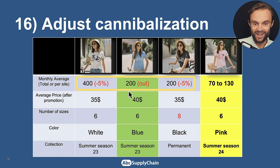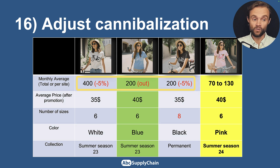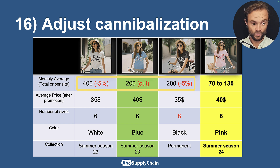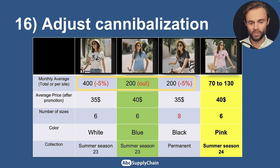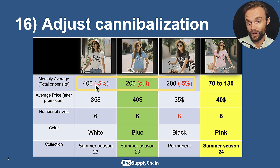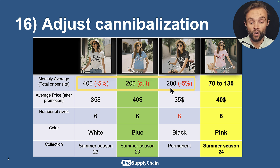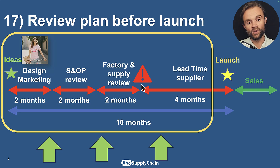If possible, try to adjust for cannibalization — when you introduce a new product, it will affect the sales of existing ones, unless you've already cleared that inventory. This is not an easy topic, so let us know in the comments if you have questions. You may need to manually adjust the impact of the new product, or your system may do it automatically. Now you have almost all the information you need, but something very important: review the launch plan not just at the beginning and end, but in between as well.